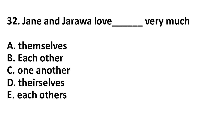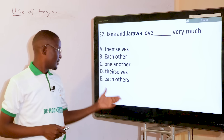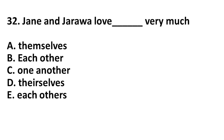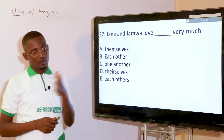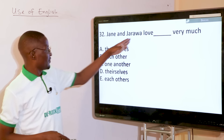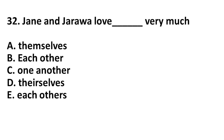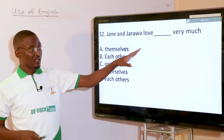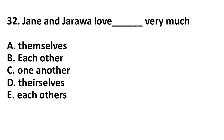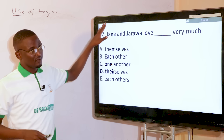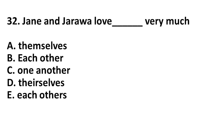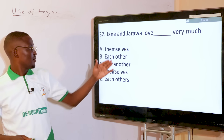Jane and Jarawa love that very much. Options: themselves, each other, one another, their selves, each others. We have reflexive and reciprocal pronouns. Each other is used for two people; one another is for more than two. Since we have two people here, the answer is each other — each other does not take S. Jane and Jarawa love each other very much. If you say themselves, it means each of them loved themselves individually — there is no reciprocation of love.